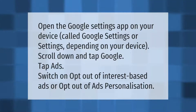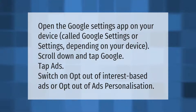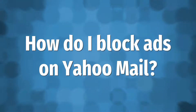Open the Google Settings app on your device — called Google Settings or Settings depending on your device. Scroll down and tap Google, then tap Ads. Switch on 'Opt out of interest-based ads' or 'Opt out of ads personalization.'